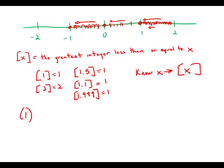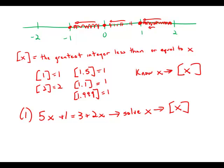Statement number 1 gives us an equation: 5x plus 1 equals 3 plus 2x. The trap here is to start solving the equation, but this is data sufficiency — we don't actually need the answer. All we need to know is that this is an equation. Obviously we could solve this equation for x, and when we know x, we can find the greatest integer value of x. Simply by the fact that we have an equation means we could find x, find the greatest integer value, and therefore answer the question. So statement 1 by itself is sufficient.